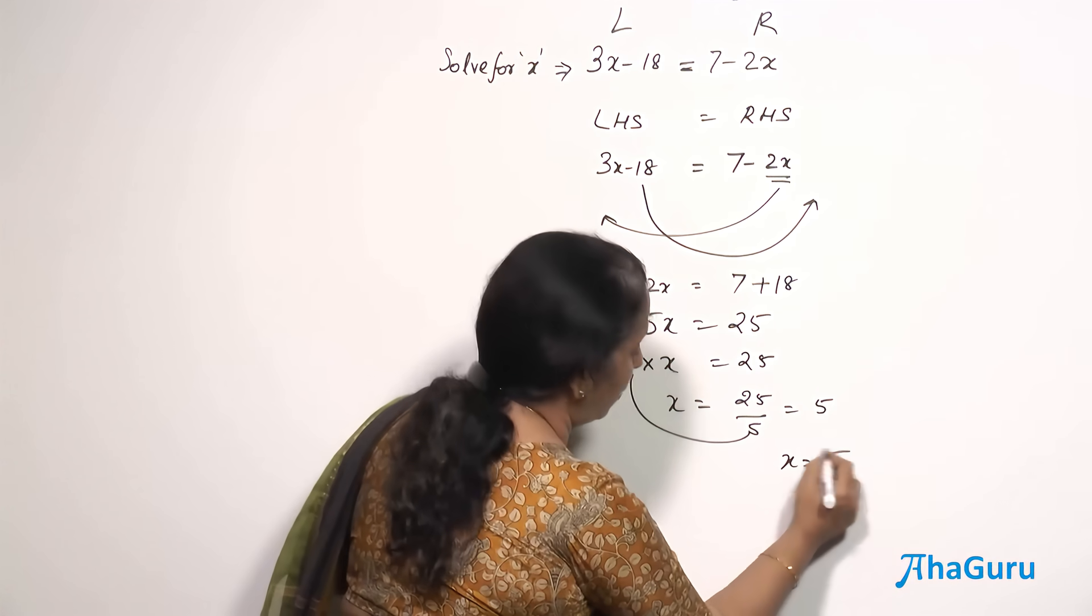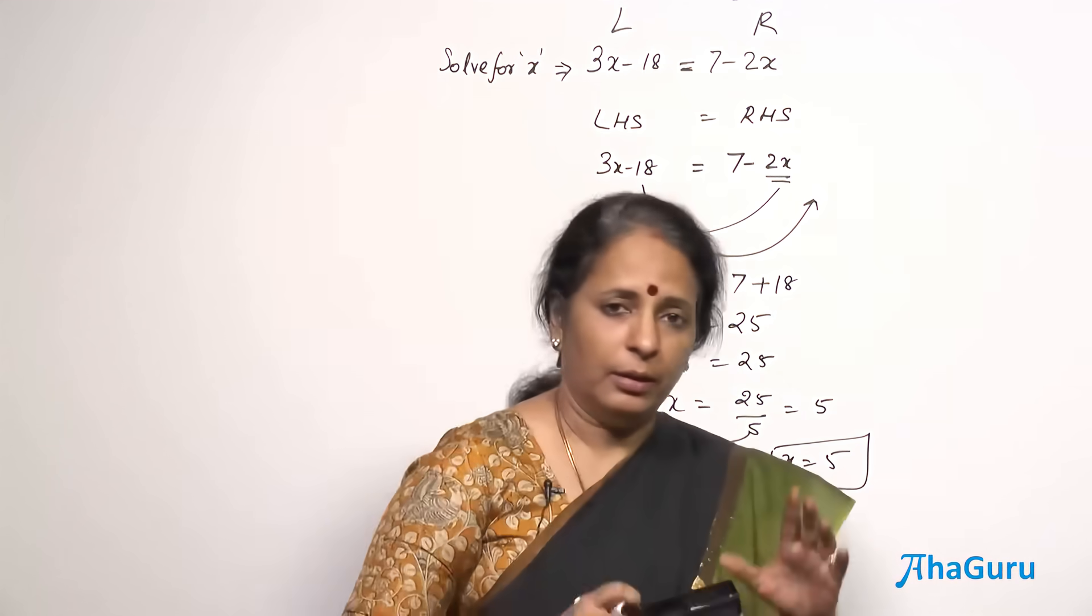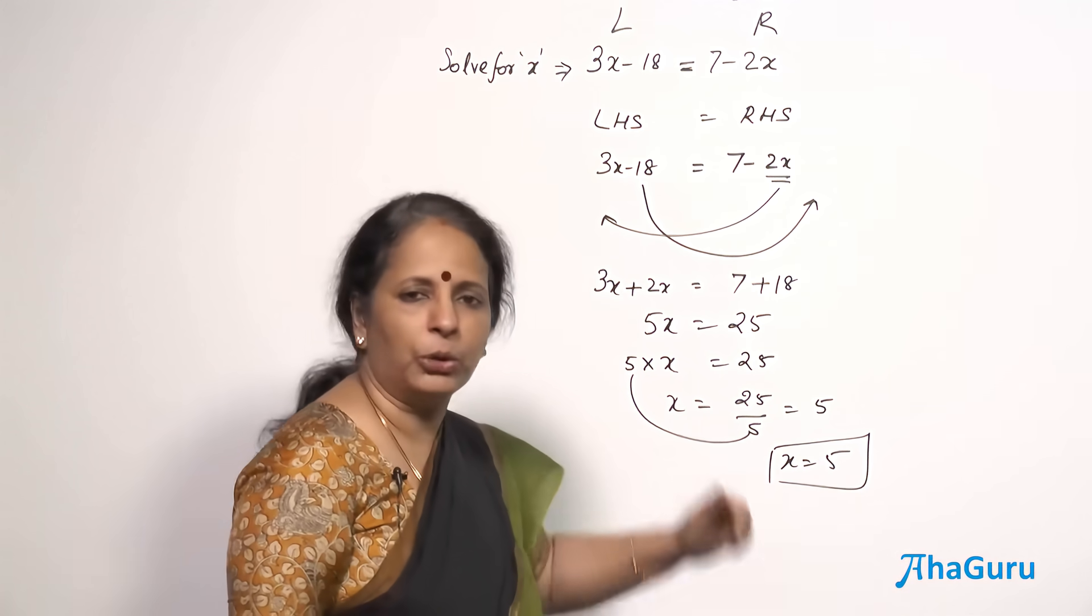So the value of x is 5 and you will get only one value. Everybody cannot get different values. The entire thing, everybody who is doing this problem should get only this answer x is equal to 5. But how do you know your answer is correct?